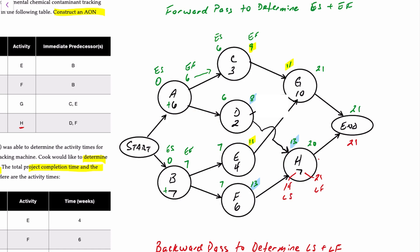For activity H: earliest start 13, earliest finish 20, latest start 14, latest finish 21. Working on activity G: 21 minus 10 is 11, so latest start is 11, latest finish is 21. G is preceded by C and E. For E: latest finish is 11, minus four is seven — so latest start for E is seven. For C: latest finish is 11, minus three is eight. Feeding back through D from H: latest finish for D is 14, minus two is 12 — so latest start for D is 12. Activity F precedes H: latest finish is 14, minus six is eight.